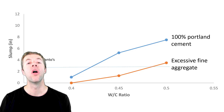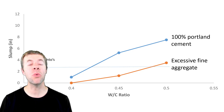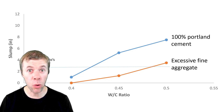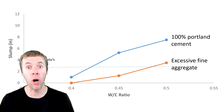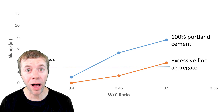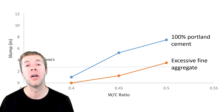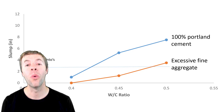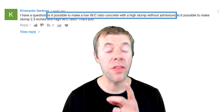Now, if that's not enough and you want to go to an even higher water to cement ratio, you could make the gradation even worse — try using excessive amounts of high intermediate aggregate as well. That might help drop the slump further. So yes, it is possible.